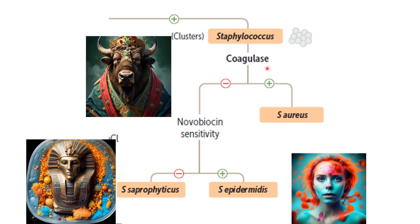For Staphylococcus, the first branching point is coagulase. A team that coagulates well — that really sticks together and has success — is Staph aureus, which shows up the most on Step 1. For the coagulase-negative staph, novobiocin sensitivity distinguishes them: 'novobiocin' sounds like 'noble bison.' The noble bison has a better shot against the unprotected epidermis (Staph epidermidis) than against Staph saprophyticus encased in a 'sarcophagus,' so novobiocin sensitivity is positive for Staph epidermidis.